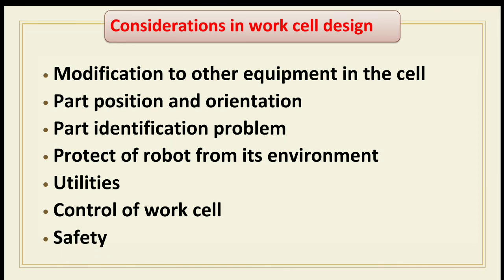The last consideration in work cell design is safety. Means of protection for human personnel from harm around the robot work cell must be provided. This is generally accomplished by means of fences or barriers and by designing a safety monitoring system to interrupt cell operation if unsafe conditions are encountered. All safety-related issues will be discussed in the last point of this chapter.